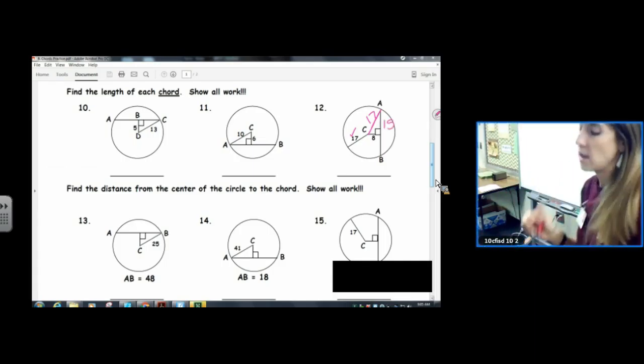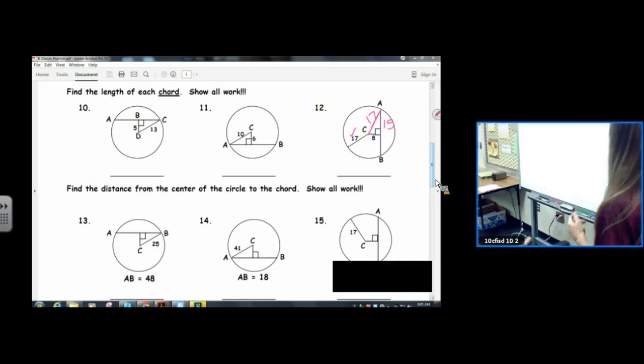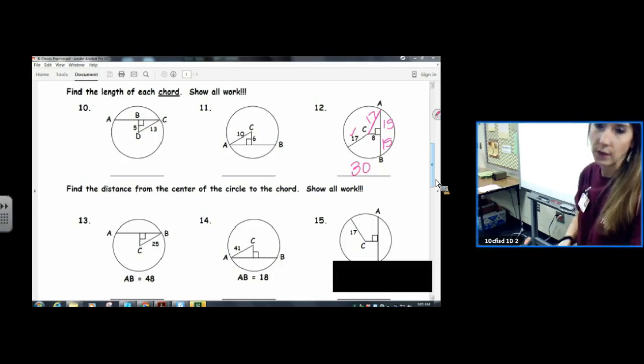Now we learned that when a radius is perpendicular to a chord, it bisects the chord. So we know that both of those segments are 15 for an answer of 30.